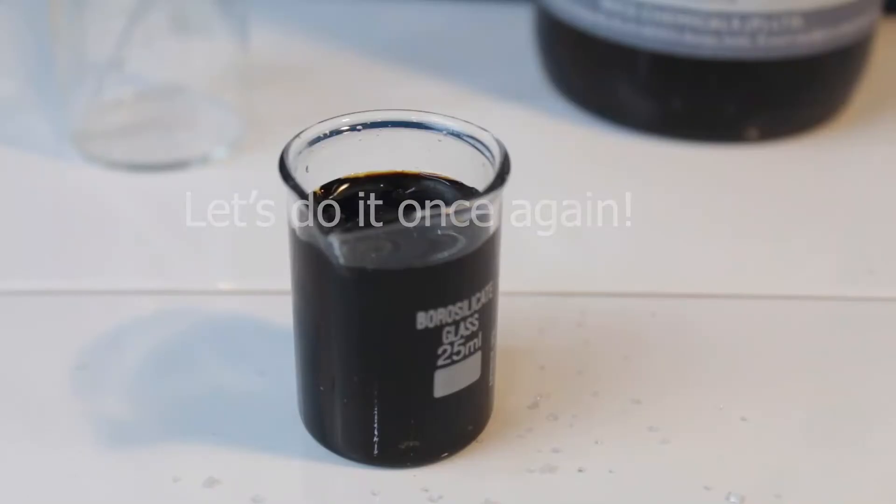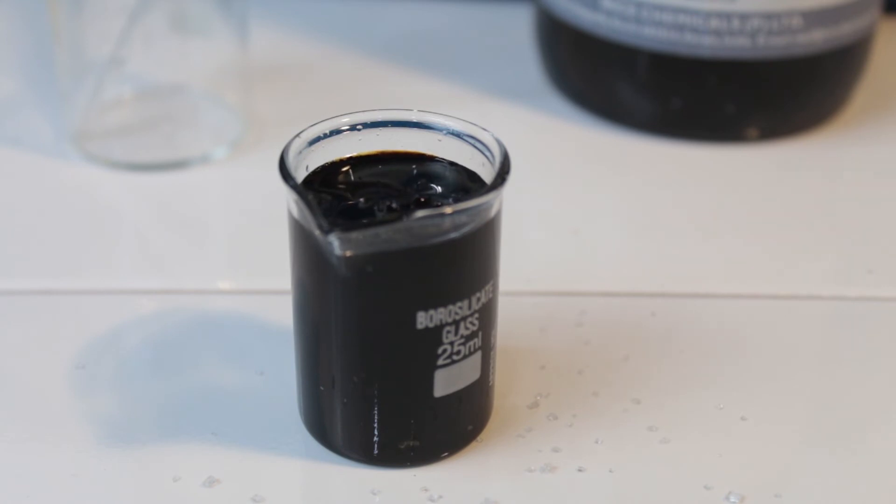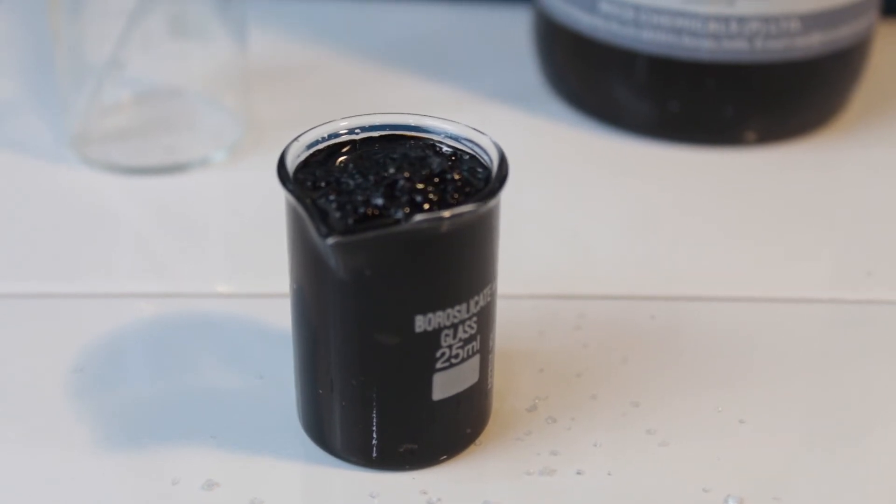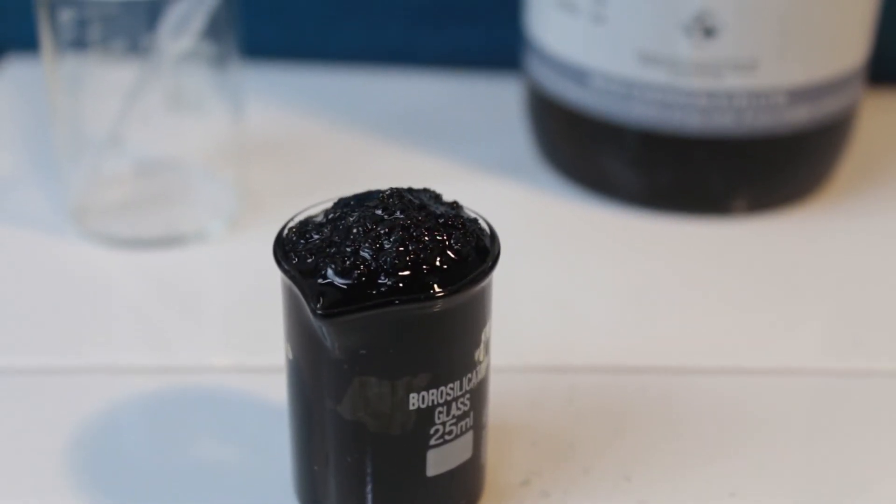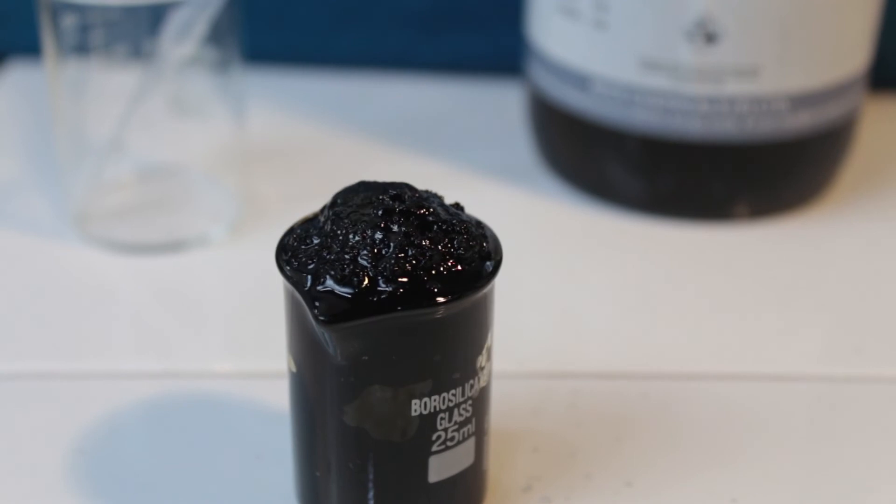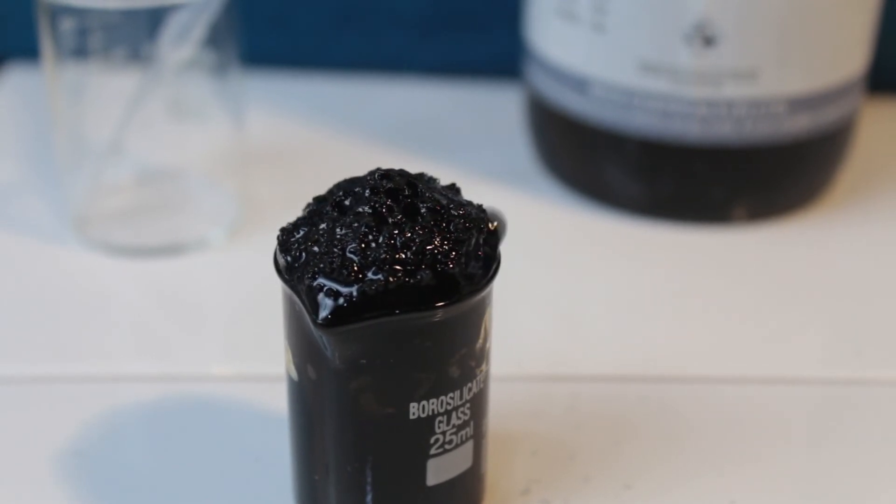Let's do it once again. Here I take 5 times more sugar. Still I use very little of it. It's just a 25 ml beaker, 10 times less than a glass, ordinary glass of water. I just do it on small scale to avoid big mess of cleaning up. You have to break, neutralize and dispose of a carbon sponge impregnated with concentrated acid.